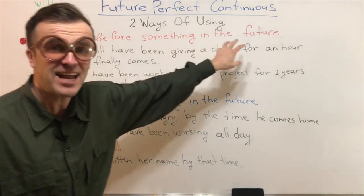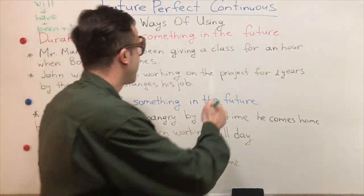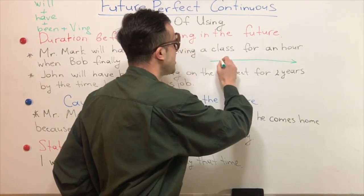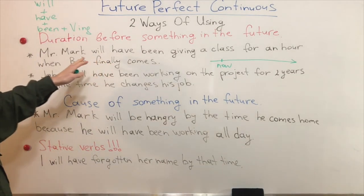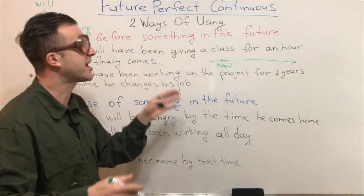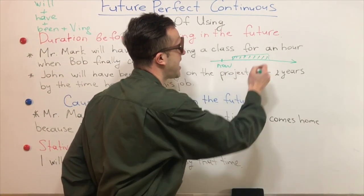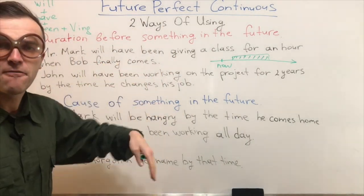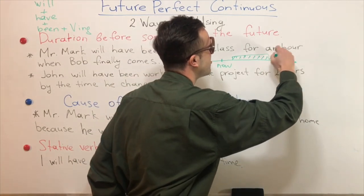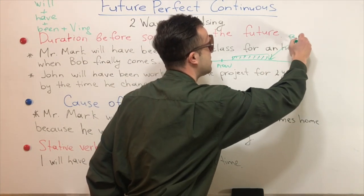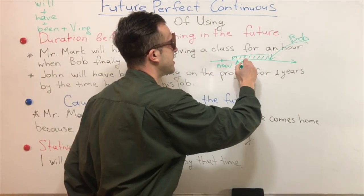To illustrate the sentence, I'll draw a graph for you. Imagine: here we have 'Now,' and here we have the point where Mr. Mark will have been giving a class. In the future, Mr. Mark will have been giving a class, but Bob finally comes and interrupts this future action. So here is Mr. Mark giving a class.